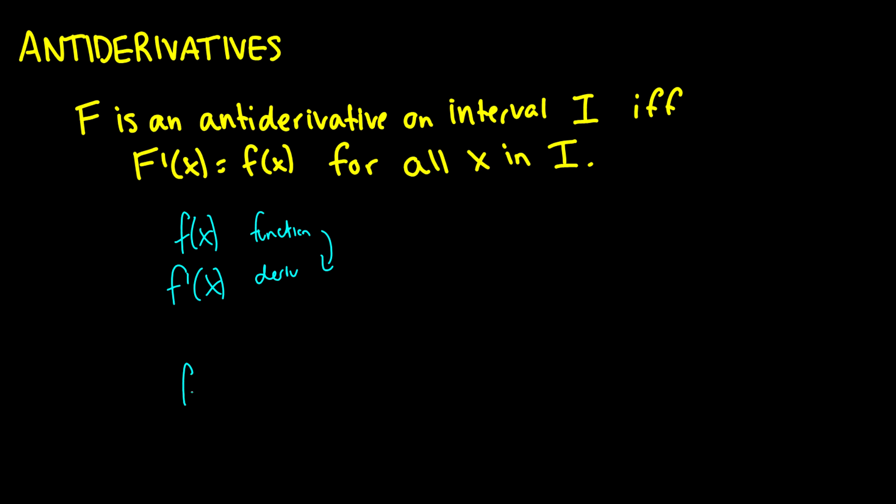What this says is we have a function f(x) and instead of taking its derivative, we actually go the opposite way. And this is called the antiderivative.